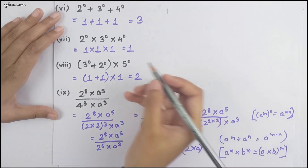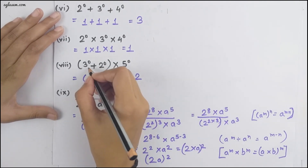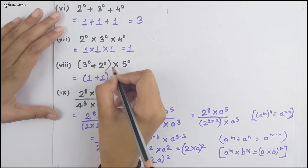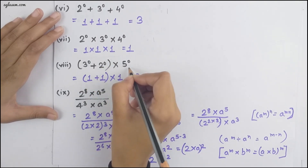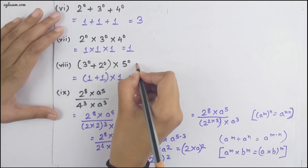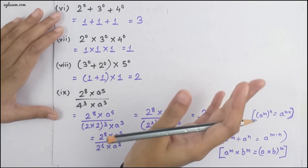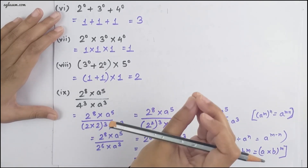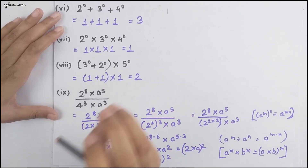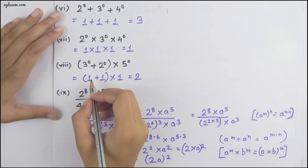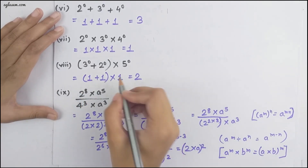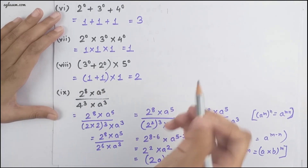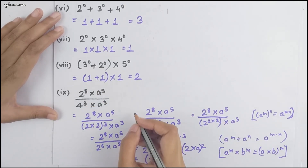Moving to the next part: 3⁰ + (2⁰ × 5⁰). Any number whose power is 0 equals 1, so we get 1 + (1 × 1) = 1 + 1 = 2.